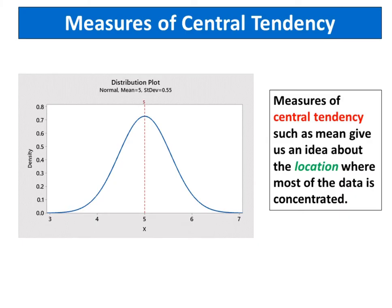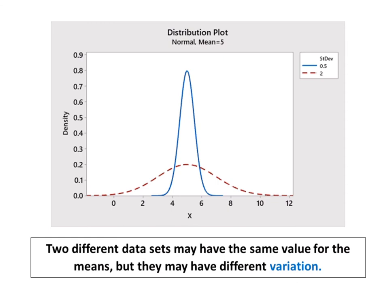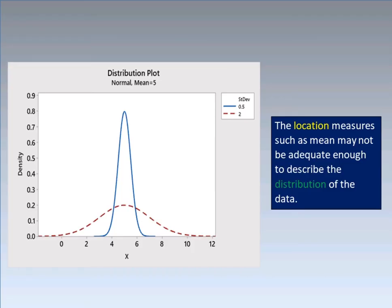Measures of central tendency such as mean give us an idea about the location where most of the data is concentrated. However, two different data sets may have the same value for the means, but they may have different variations. In this case, the location measures such as mean may not be adequate enough to describe the distribution of the data.